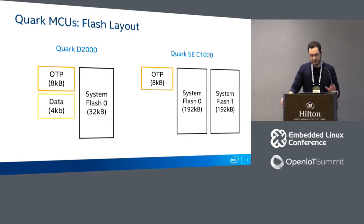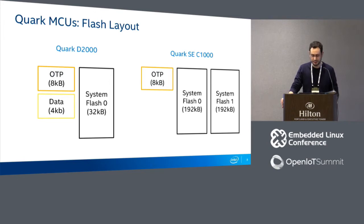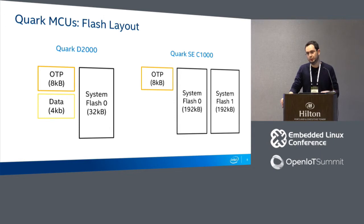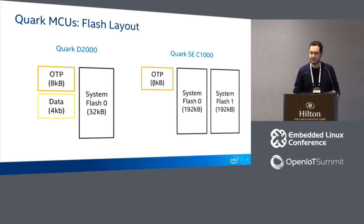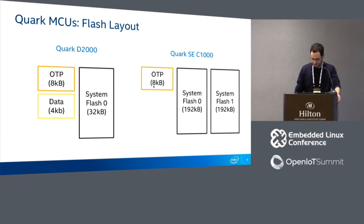From the bootloader point of view, the D2000 and C1000 are quite similar, because we have to put the bootloader in the OTP region, which is 8KB for both SOCs.